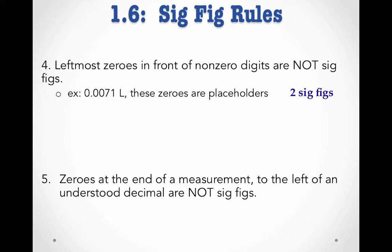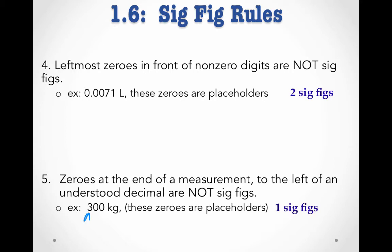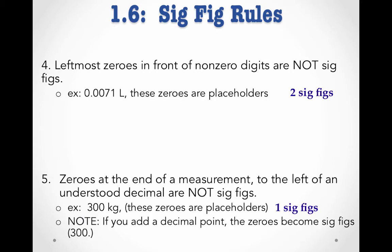Finally, zeros at the end of a measurement to the left of an understood decimal are not sig figs. For instance, 300 kilograms. Notice there's no decimal place here. This indicates that those zeros are uncertain. It might be 290 kilograms; it might be 315 kilograms. We don't really know. That means that this measurement has one sig fig. An important note, though: if we wanted to indicate that those zeros were measured and were known precisely, we could simply add a decimal point, making all three digits significant.